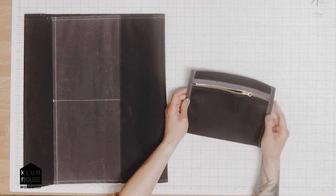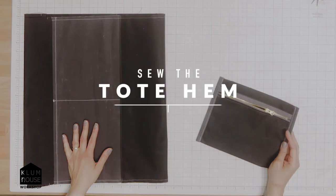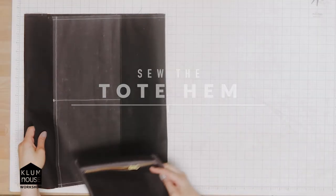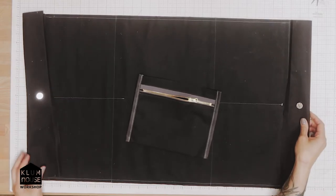Now that we've completed our interior pocket, it's time to attach it to the main bag. When we attach the interior pocket to the main bag, we also sew the hems down.